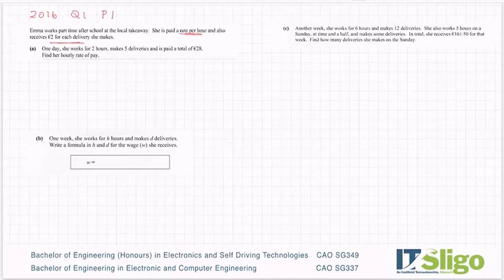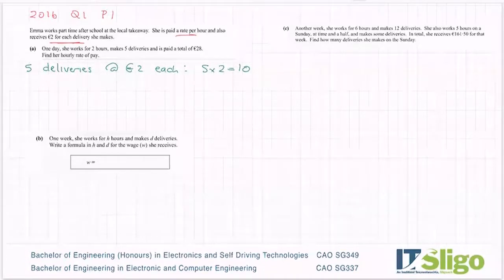Okay, well she gets two euros for each delivery, so she made five deliveries at two euros each. So that's five by two is ten. So ten euros out of her salary of 28 was for the deliveries she made. And then she worked two hours, so if I take away that 10 from her wages it leaves me with 18 euros, and she got that for working two hours, so if I divide that by two it's nine euros per hour.